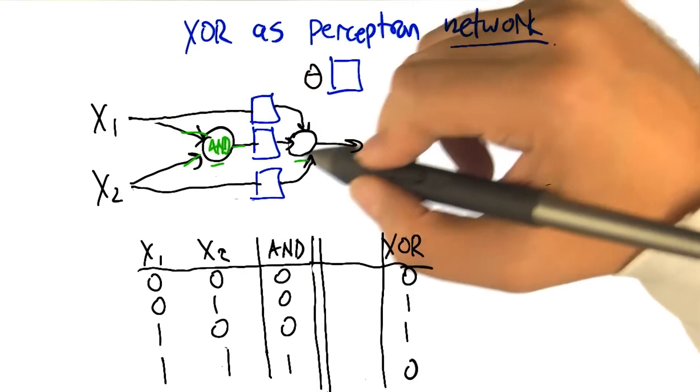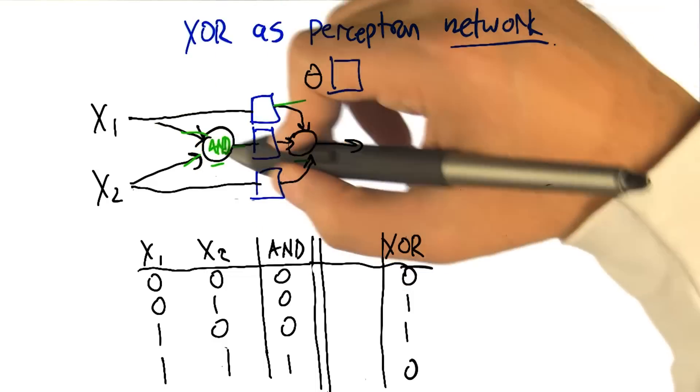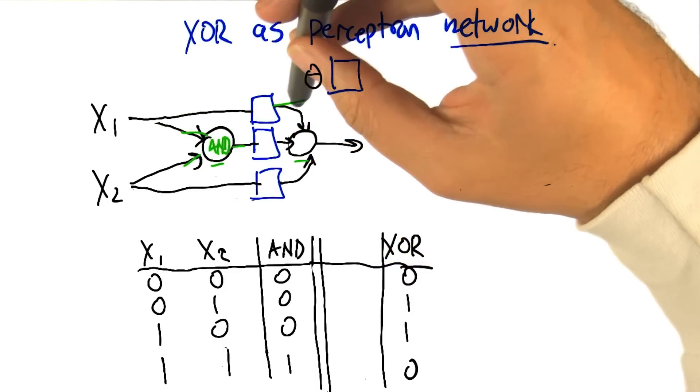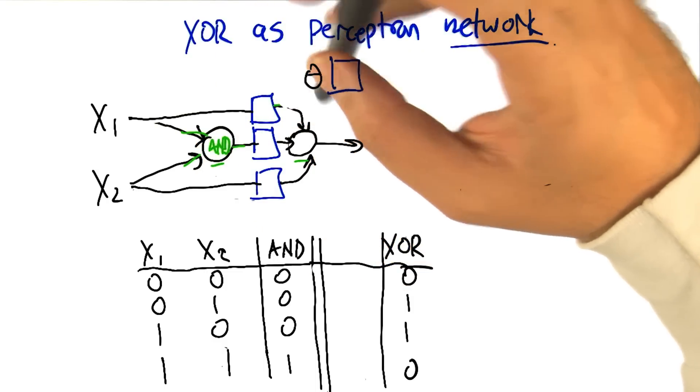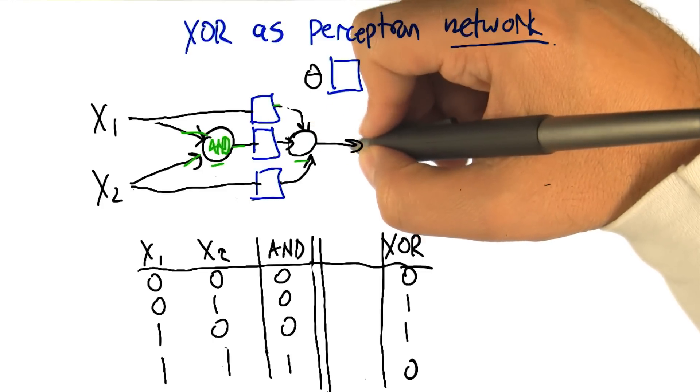But what we don't know, it turns out to be the case that the second unit with now three inputs, X1, X2, and the AND of X1 and X2, can also be configured. We can set the weights on that so that the output is going to be XOR.